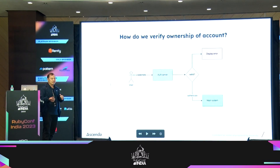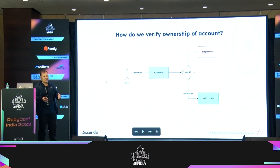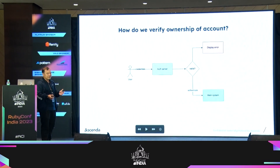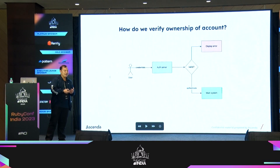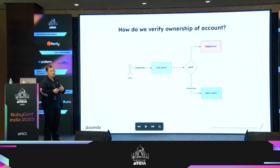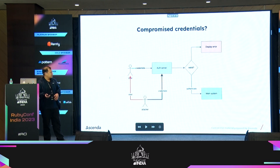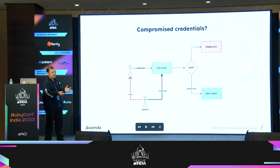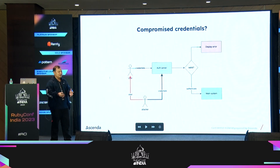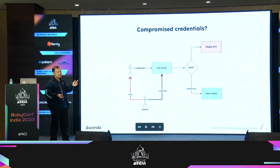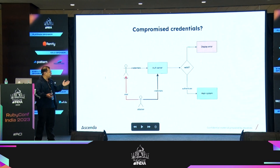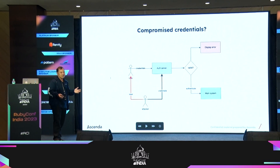Normally, when a user comes into your system and they want to access an account, how do we verify that ownership? A basic way would be having a login page with a username and password. When the user types in the username and password, the authentication server can verify whether that matches, and if so then the user can enter the system. Otherwise, we display an error. What happens if an attacker uses some method like social engineering or gets a database of leaked passwords and uses those credentials? Then without anything else in place, the attacker can now access a valid user account.